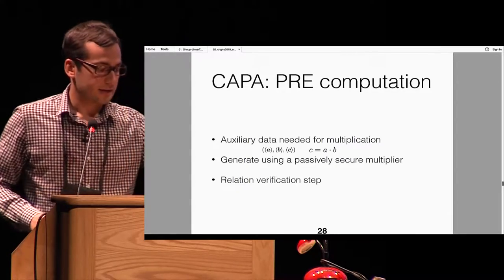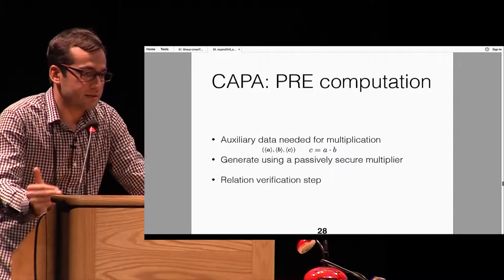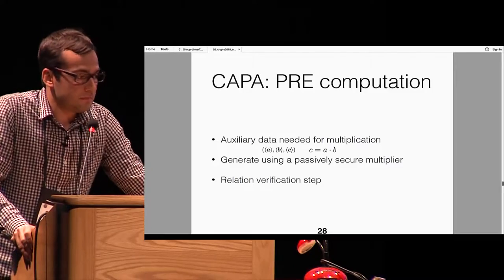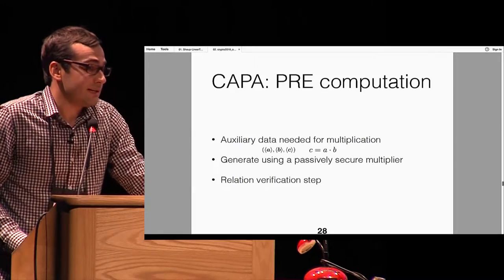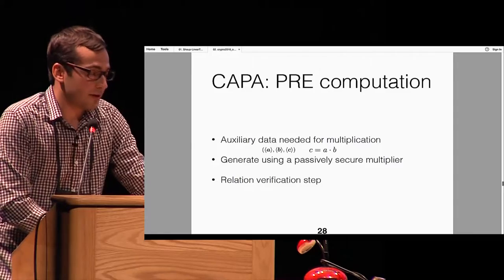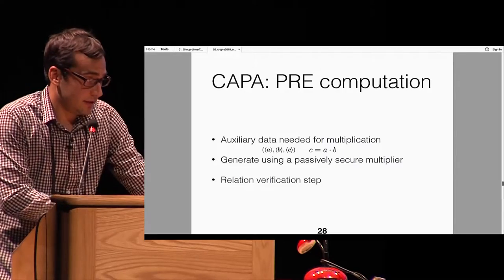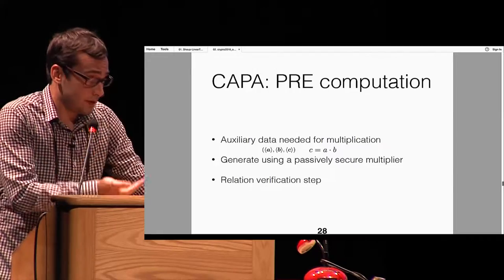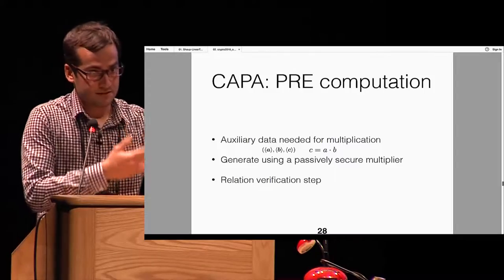This auxiliary data is required — all the magic comes from having this triplet satisfying the relation C = A × B. Of course it does not automatically fall from the sky; we cannot use a simple PRNG like in conventional masking. We have to compute this beforehand. We start by generating the triplets with a passively secure multiplier and then add security for active adversaries with a relation verification step. The details are in the paper.